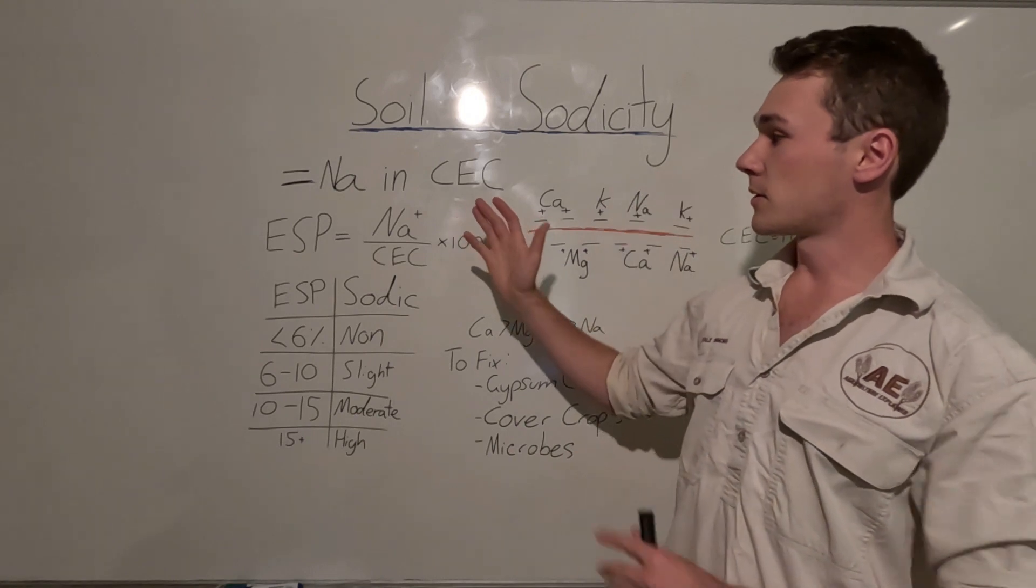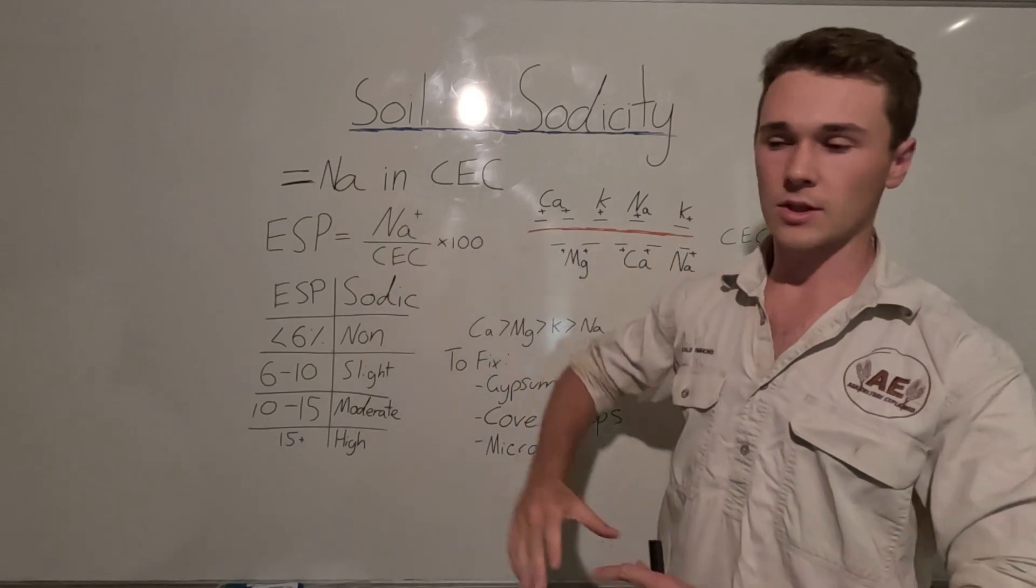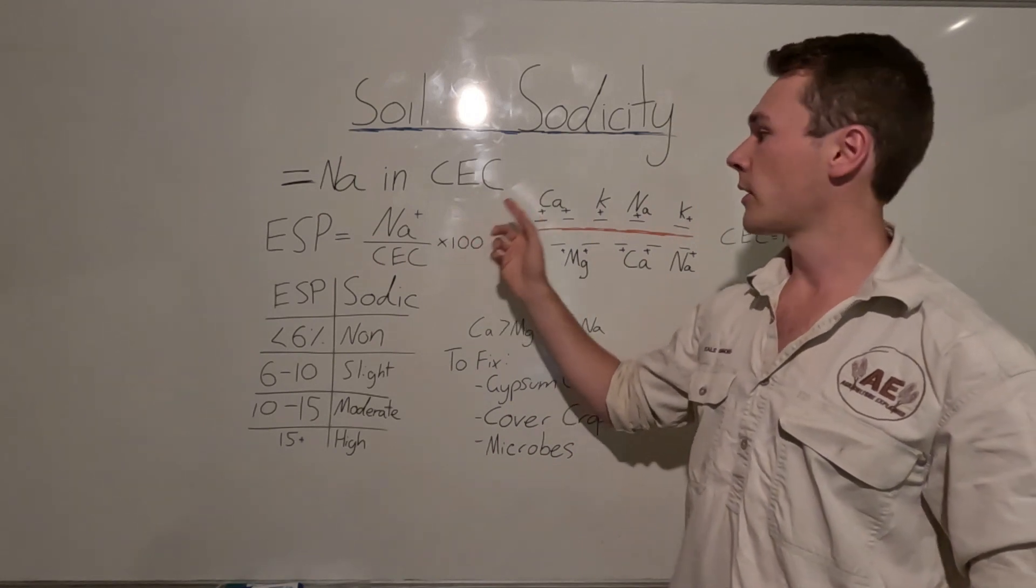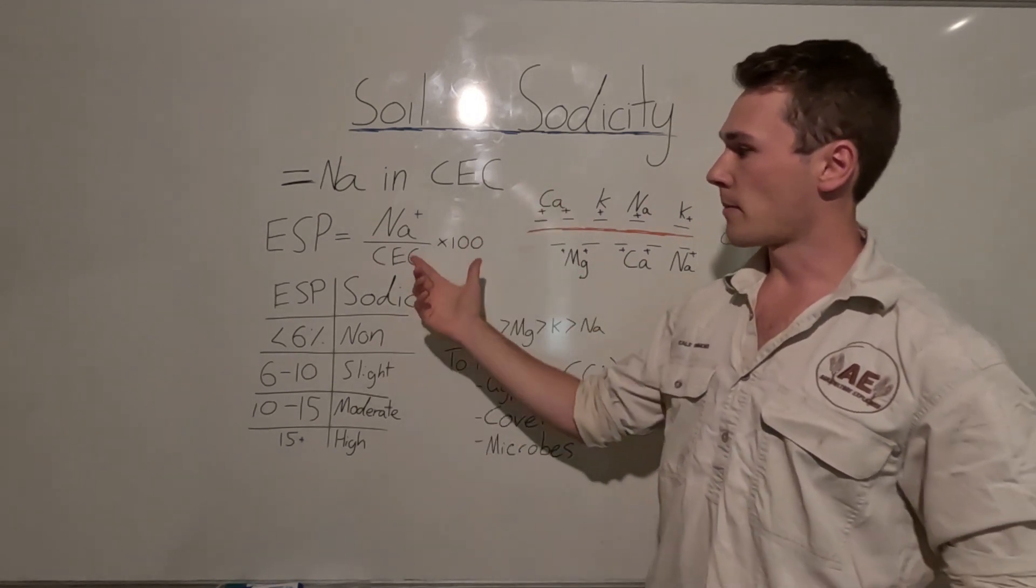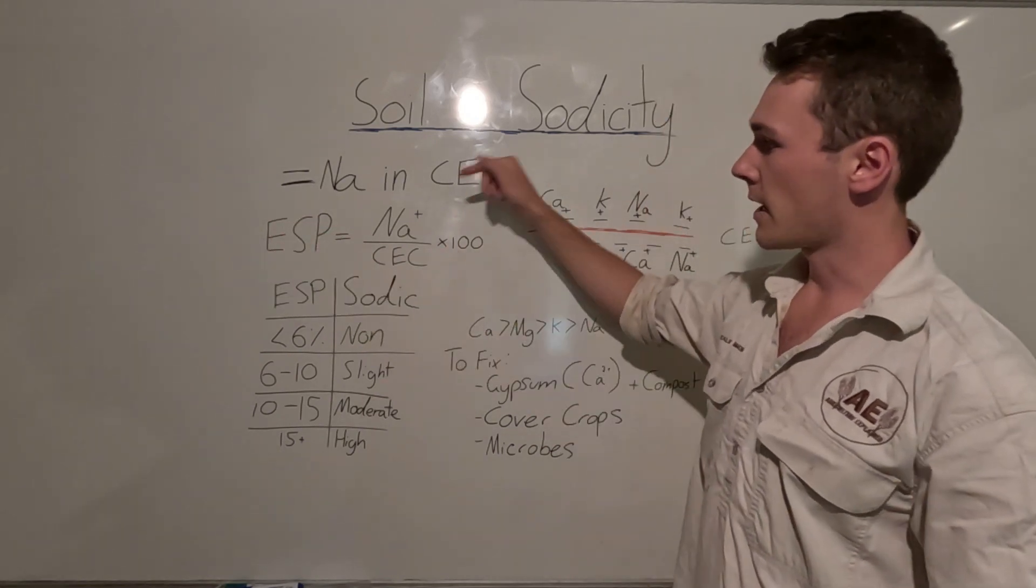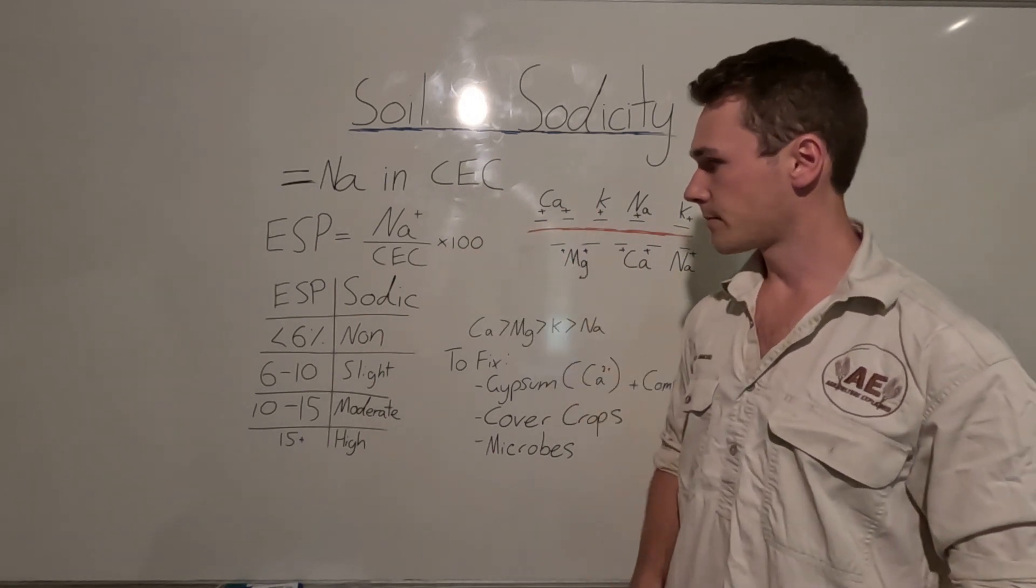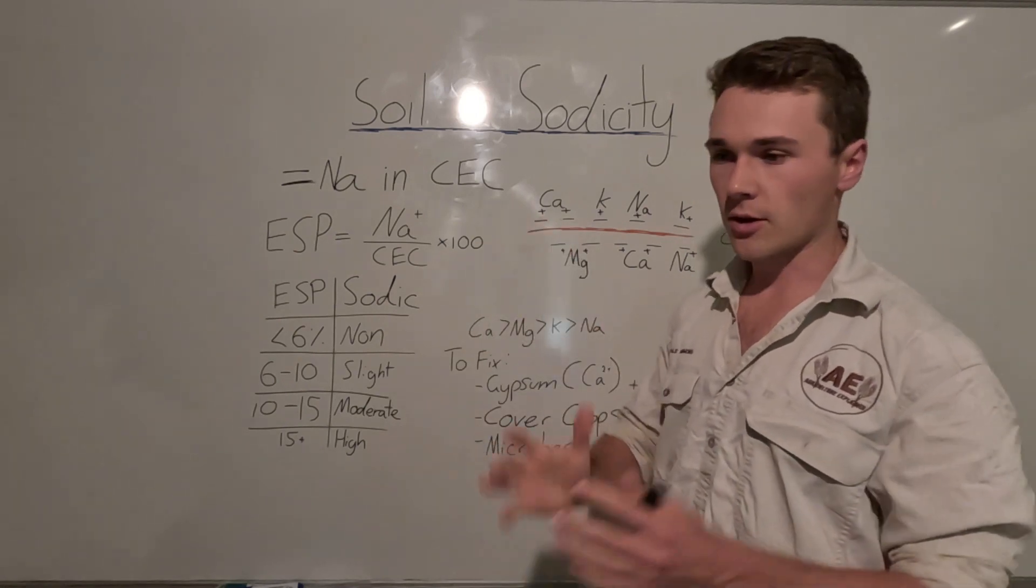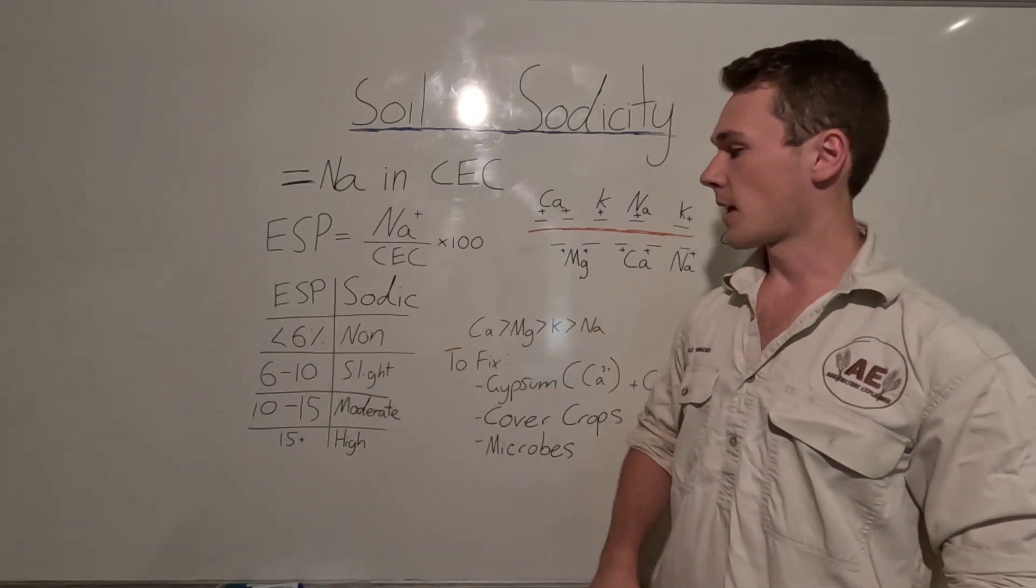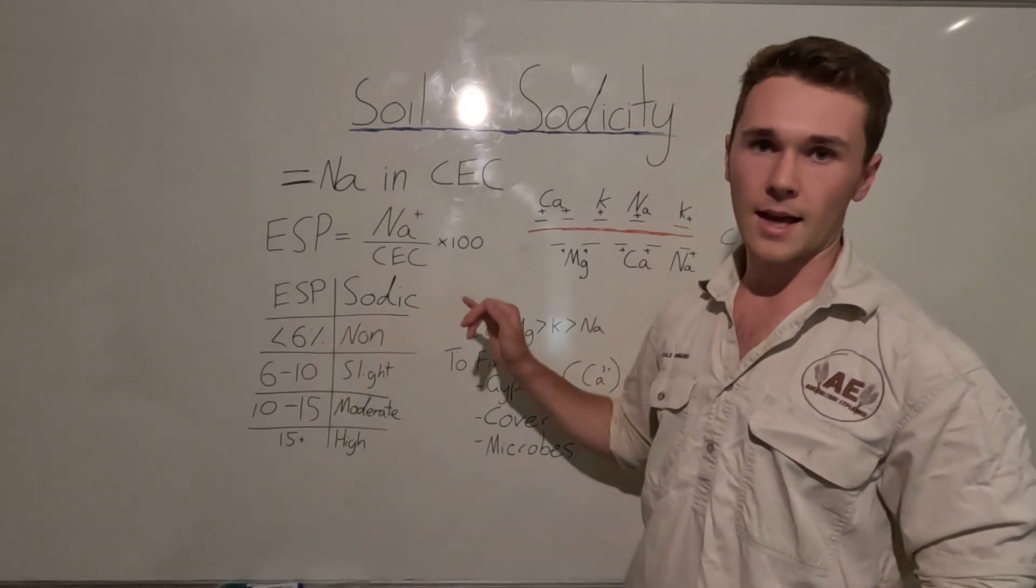Cool, so sodic soils or sodicity in our soils simply means the amount of sodium, which is a mineral in our soil, the proportion of that in relation to our cation exchange capacity. And so the way we measure that is as exchangeable sodium percentage, which is the amount of sodium in our cation exchange capacity expressed as a percentage. To know if our soils are sodic or how sodic they are: typically if our soils are less than 6% sodium or have an ESP of 6%, then they are non-sodic.